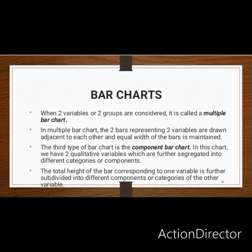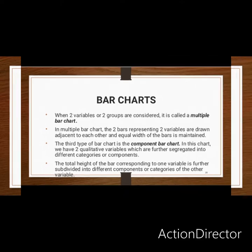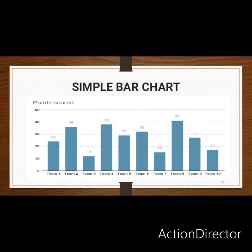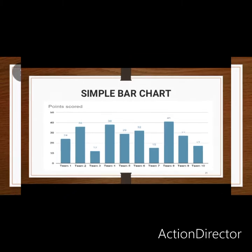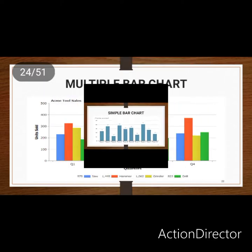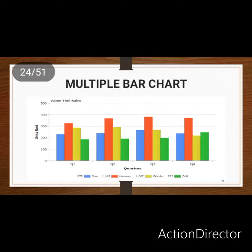One thing about this bar chart is that you can see the bars. This is the simple bar chart — you can see the height at 24 and easily interpret it. The next is the multiple bar chart, where you can see different data presented alongside each other.